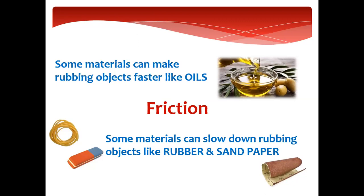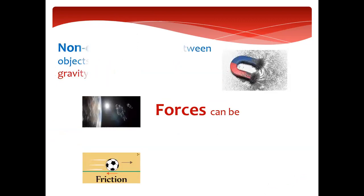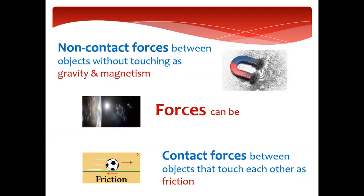Some materials slow down the rubbing of objects — like rubber or sandpaper. If there is sandpaper on the floor and you step on it with your shoes or socks, you will slow down — it means it has higher friction. You cannot slide on it because it has high friction. So forces can be balanced and unbalanced, push and pull, and then the important types: magnetism, gravity, and friction.